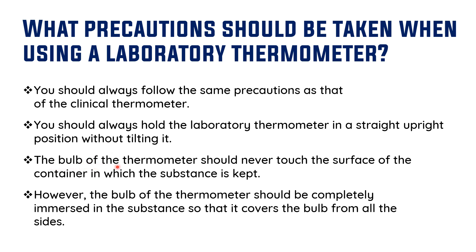The bulb of the thermometer should never touch the surface of the container in which the substance is kept. For example, when measuring the temperature of water in a beaker, don't let the bulb touch the sides of the beaker — it should touch only the water. Also, the bulb should be completely immersed in the substance so that it is covered from all sides. If only half the bulb is submerged, you will not get a correct reading.